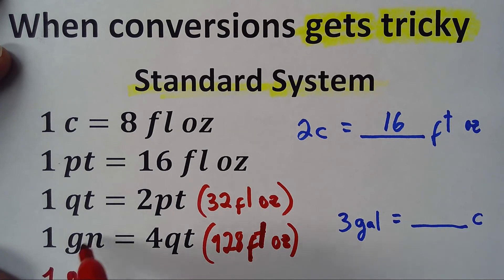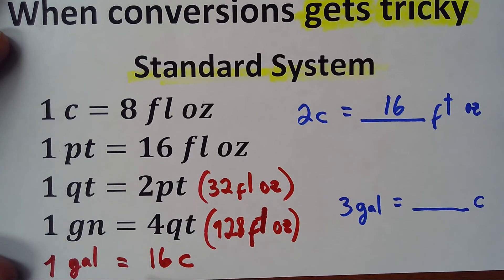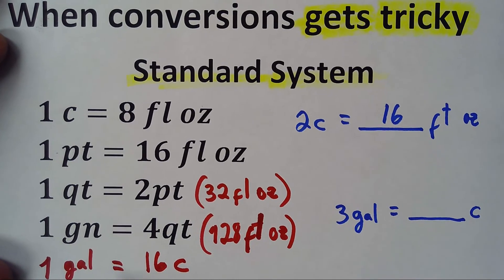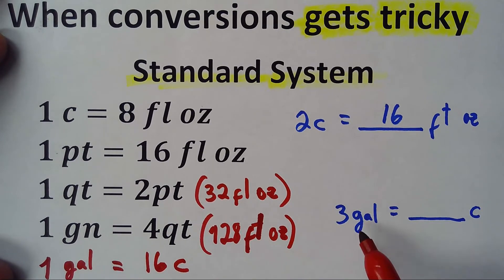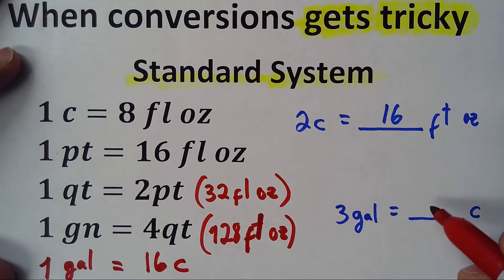So I know now that one gallon would be 16 cups. Once I have this - one gallon, 16 cups - I can do now three gallons because I just do 16 times 3, which is 48. So three gallons will be 48 cups.